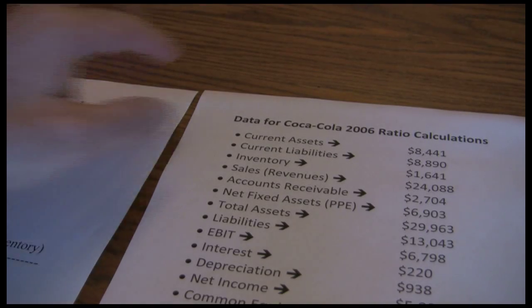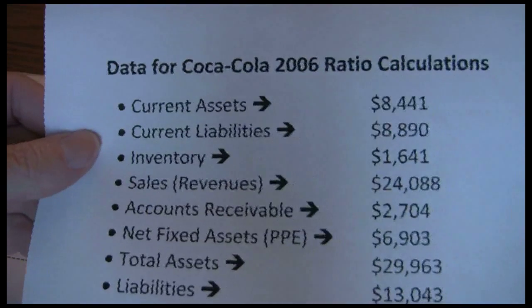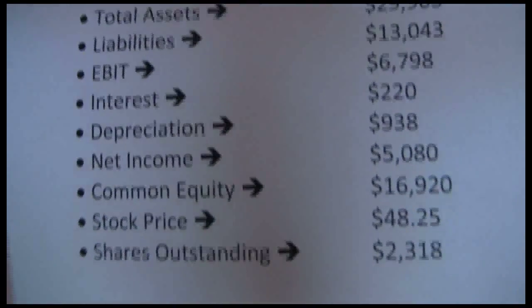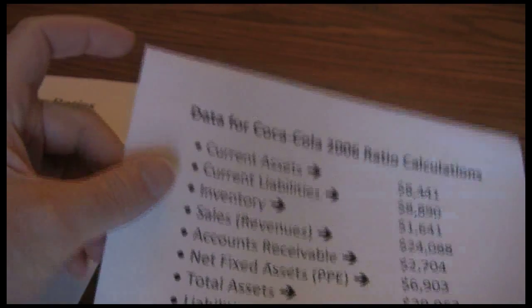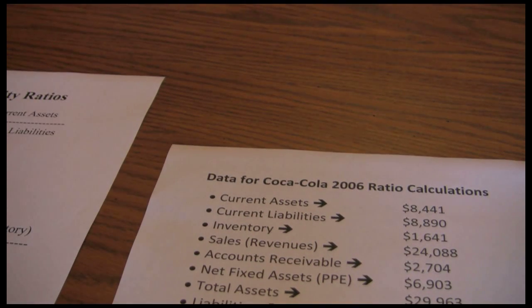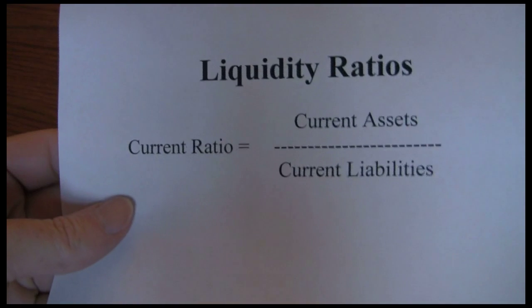In the previous video, we gathered all the information for our financial ratio calculations and recorded it on a single sheet. What I want to do now is go through the ratios in parts. I'm going to do each category in a separate video, otherwise it'll be very long. We'll start with the liquidity ratios.